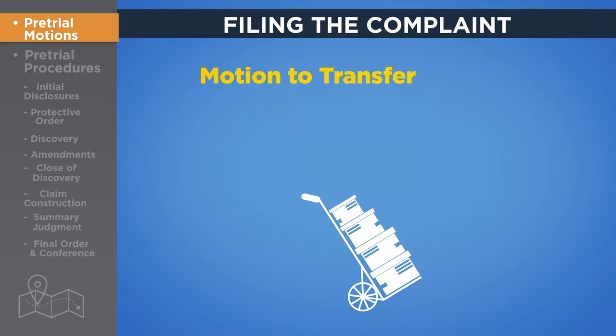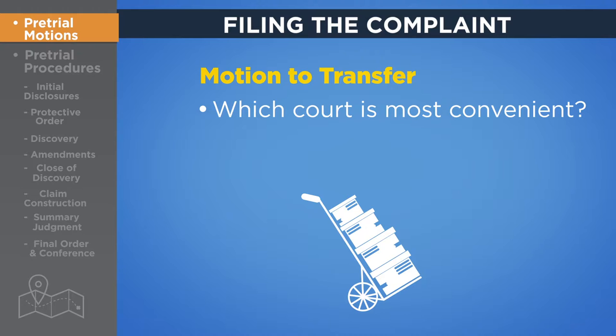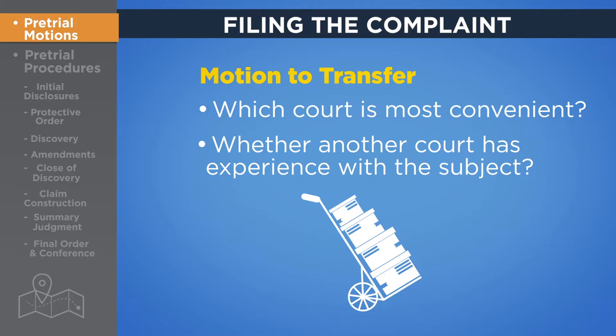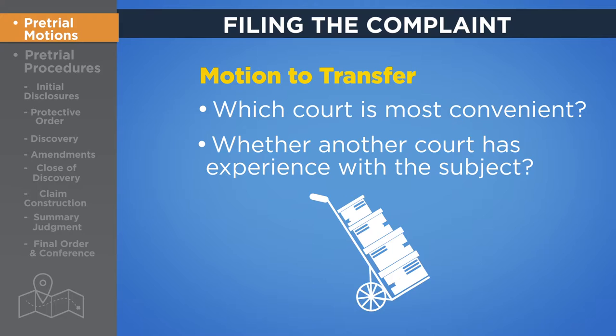Motions to transfer can be filed by a defendant who believes another court would be a better place to proceed with the case. When considering a motion to transfer, the court considers which court is most convenient in terms of the location of necessary witnesses and/or documents, and whether another court already has experience with the subject matter. Such motions usually fail but can delay the progress of the case by several months, sometimes longer, while the court considers how to rule. The parties must present detailed arguments about why the case should be moved or not, and often the court will order an oral argument during which each party can present its position and answer questions.